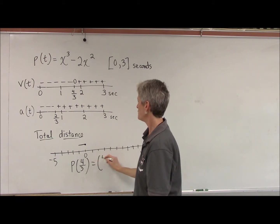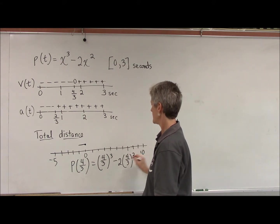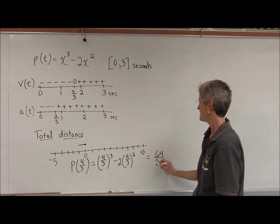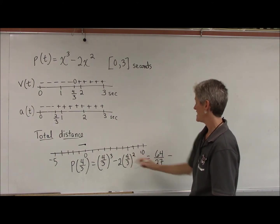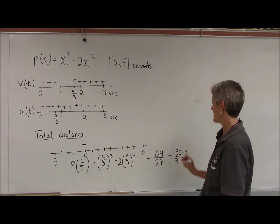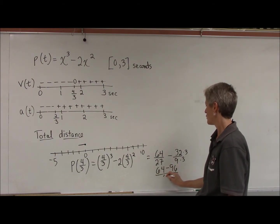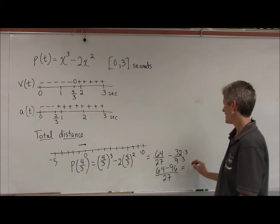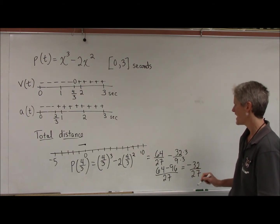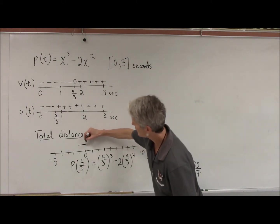We can do this without a calculator. Let's see: 4 thirds cubed is 64 over 27. Then 2 times 4 thirds squared is 2 times 16 ninths, which is 32 ninths. Getting a common denominator gives us 64 over 27 minus 96 over 27, which leaves us with negative 32 twenty-sevenths. That's a little beyond negative 1.